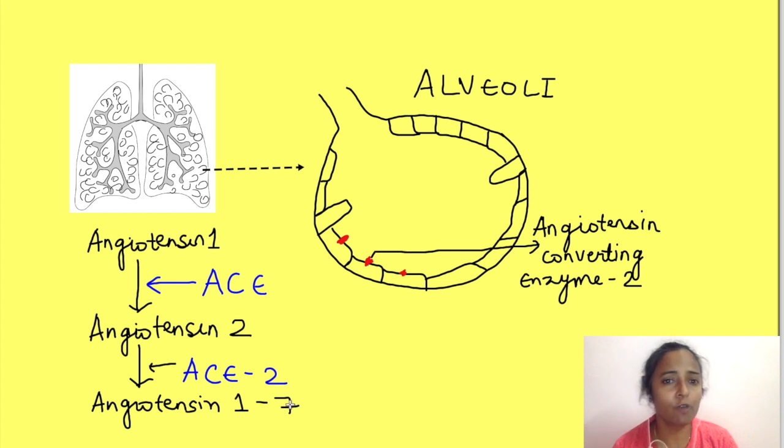The action of this form of angiotensin is completely opposite to that of angiotensin 2. Basically, it has a very important function in the renin-angiotensin system since it prevents overfunction of angiotensin 2 by counteracting its functions.